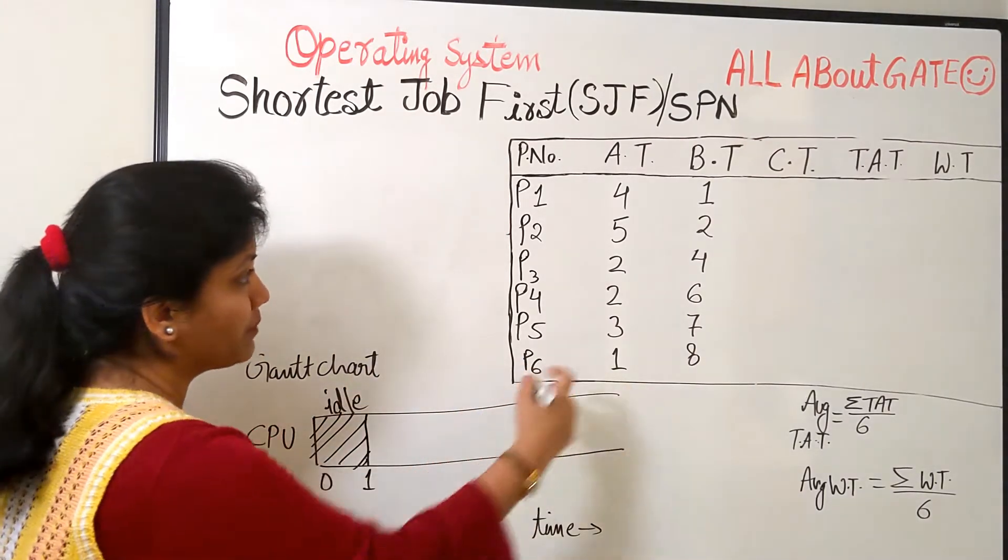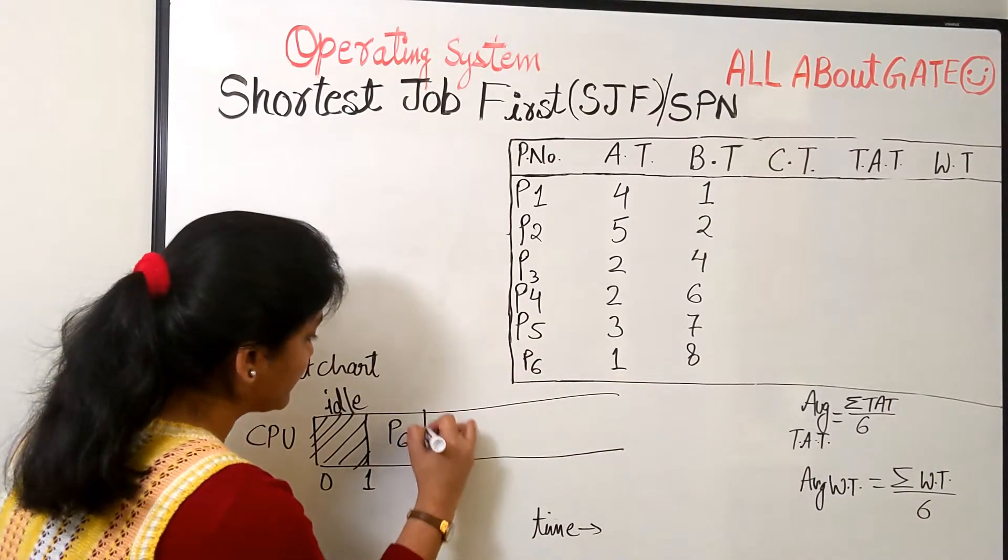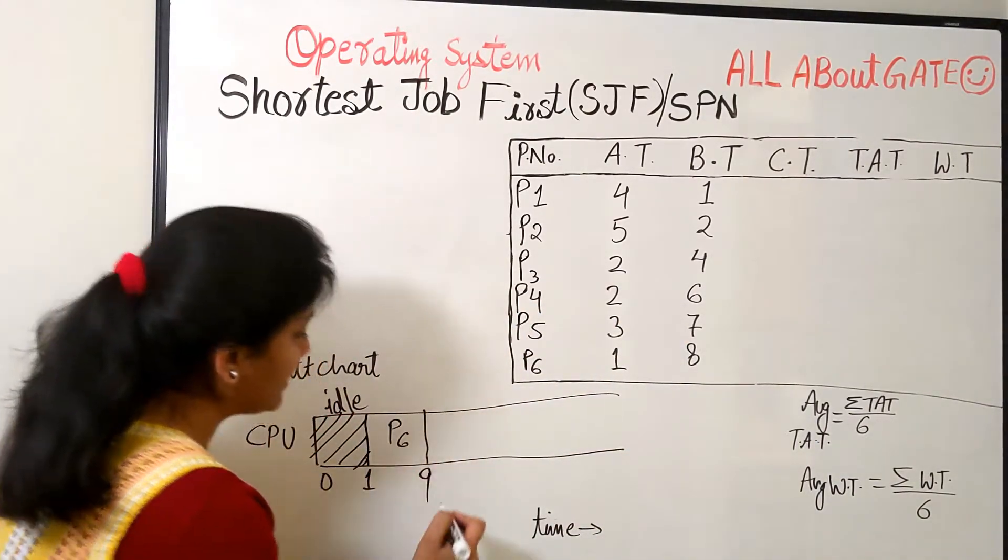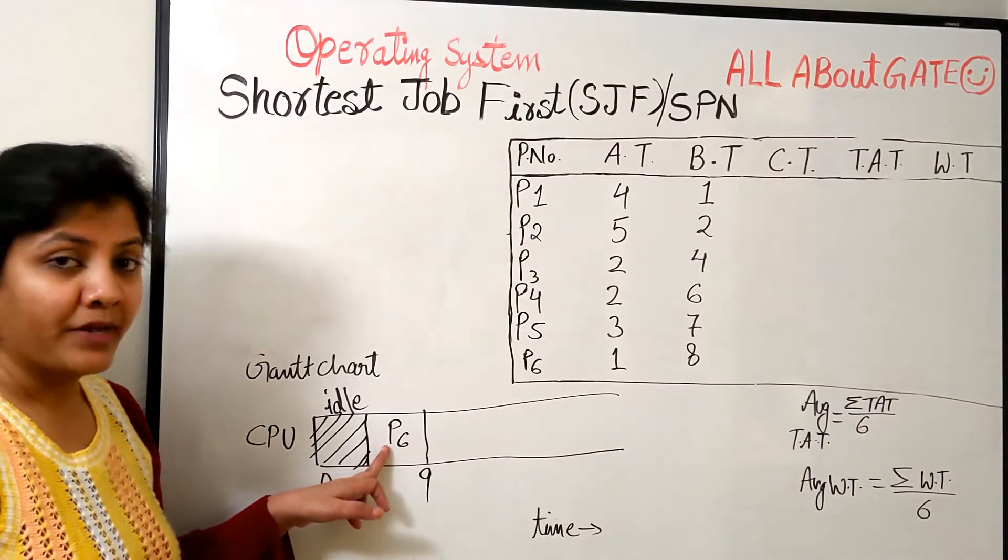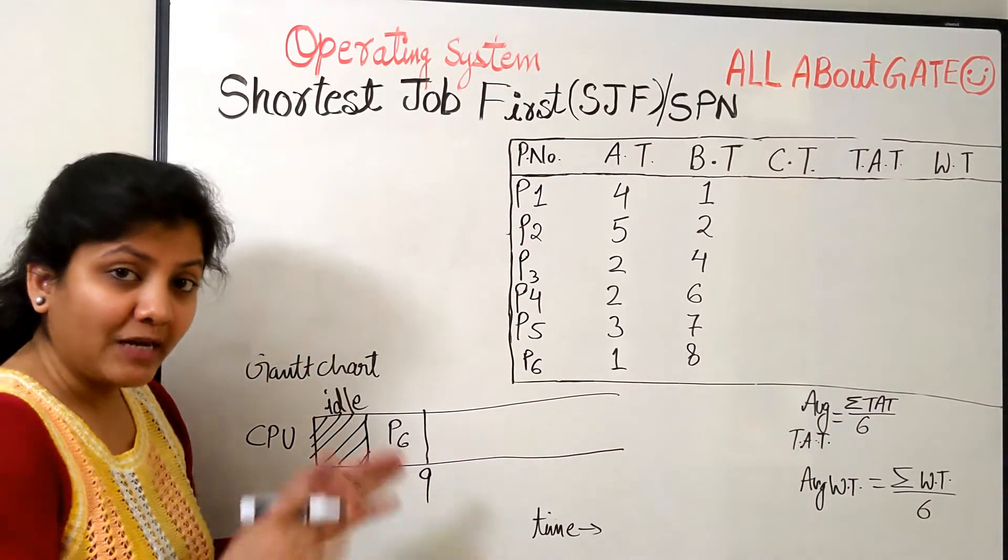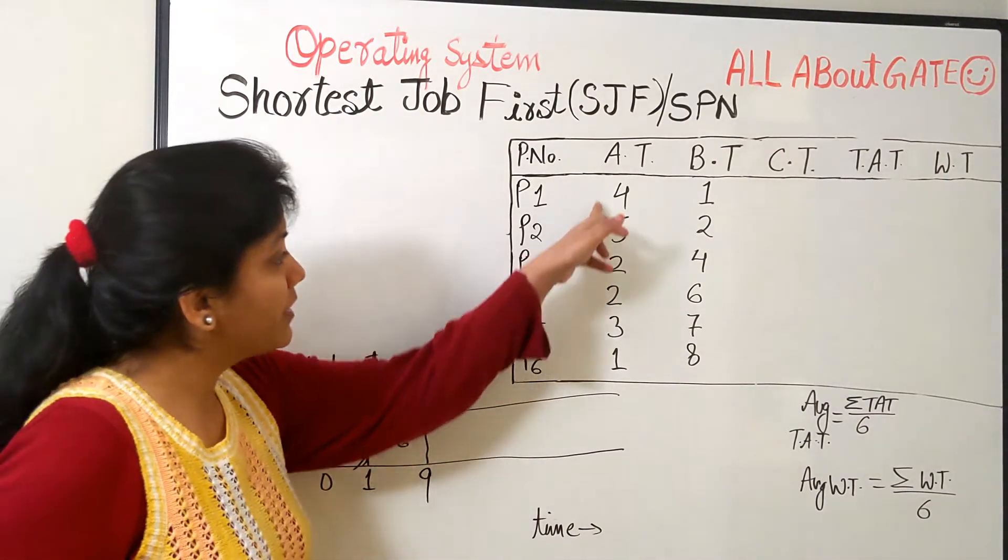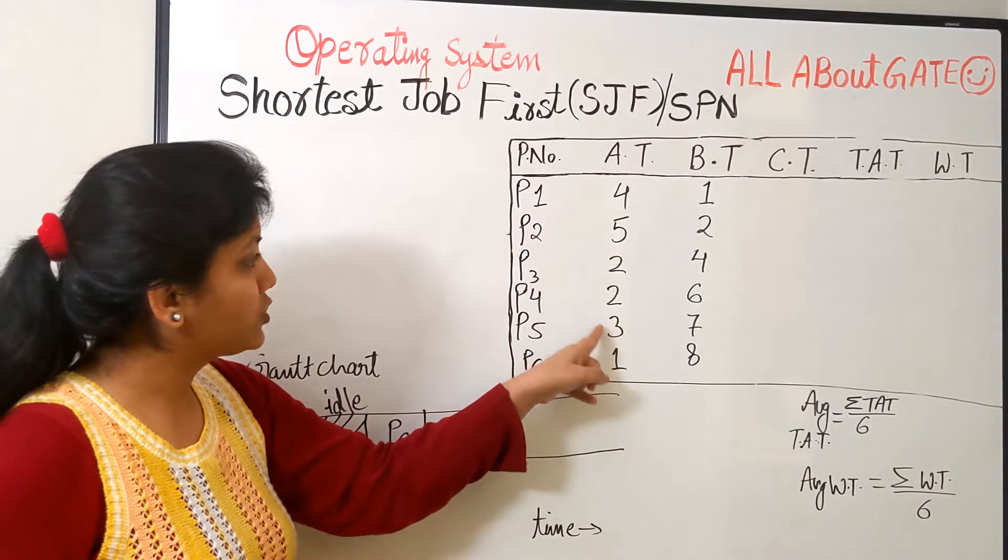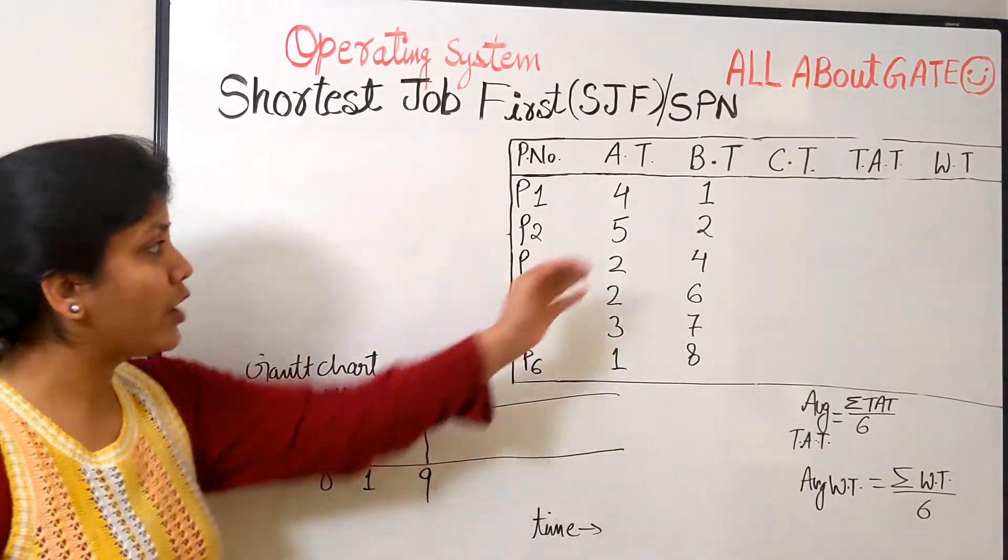At time 1, we have just one process. So we just have to take this and schedule it for whatever amount of time it needs. So 1 to 8, till the 9 burst, P6 is scheduled. Now you see everyone, this is important to understand. At time 9, by the time 9 is there, all the remaining processes have arrived. All the remaining, time 2 some came, 3, 4, 5. All processes are there in the system now.